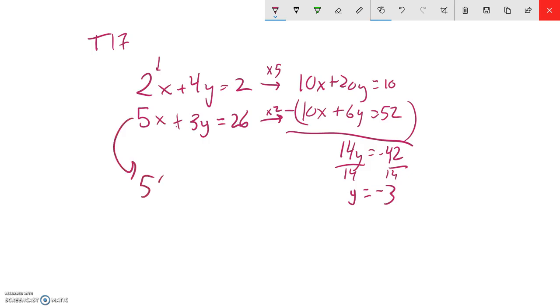I'll just plug it in here. 5 times x plus 3 times y, which is negative 3, equals 26. So I have 5x minus 9 equals 26.